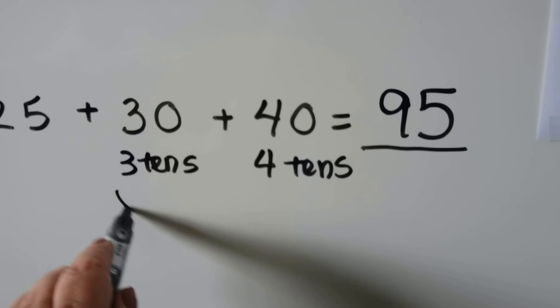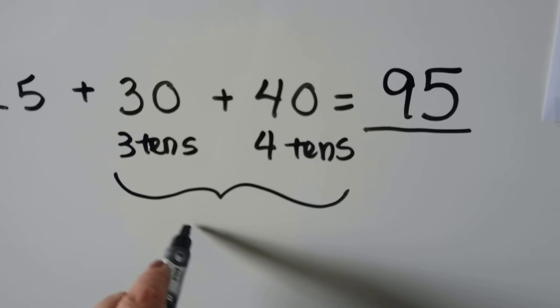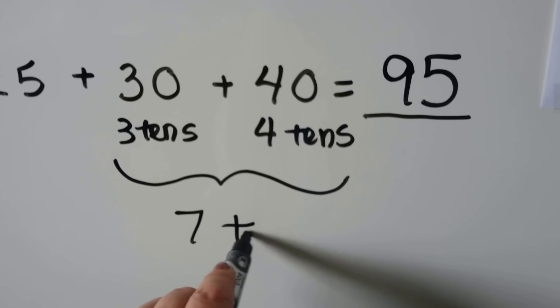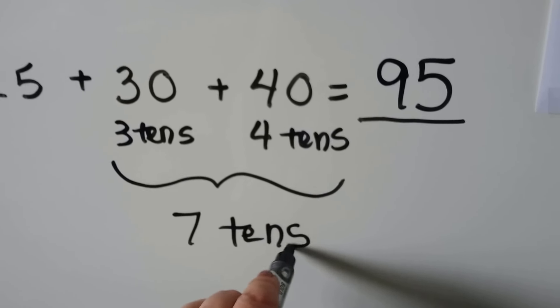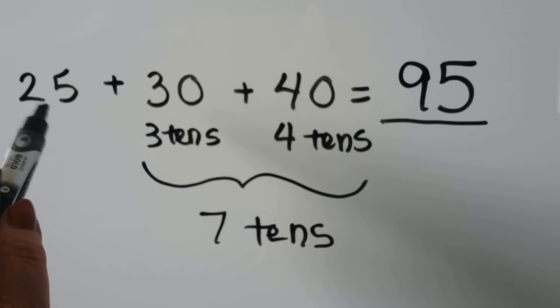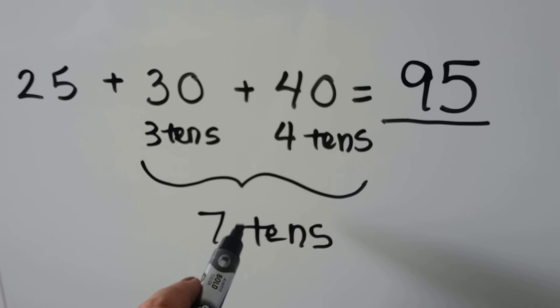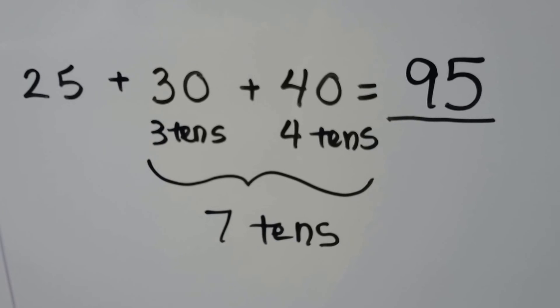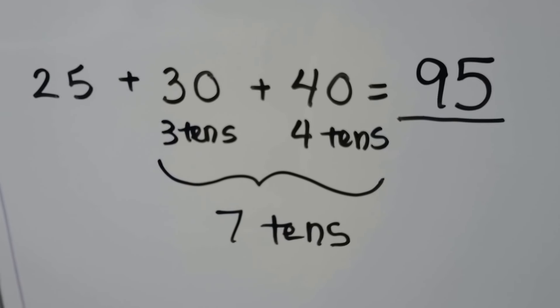25 plus 30 plus 40 is equal to 95. This 3 tens and 4 tens makes 7 tens, doesn't it? We could have started at 25 and just hopped down the column 7 tens. It would have been the same answer.